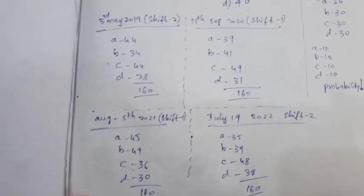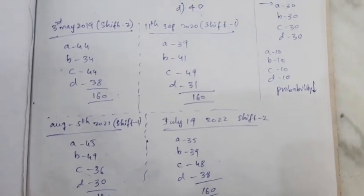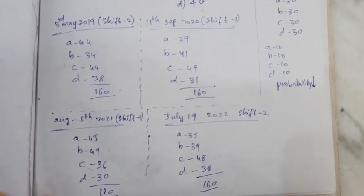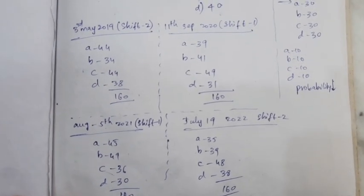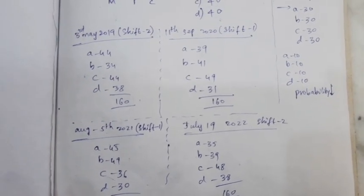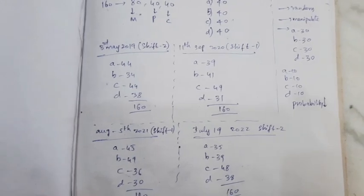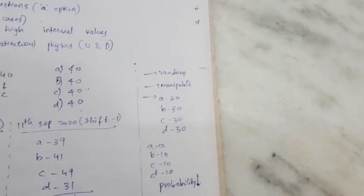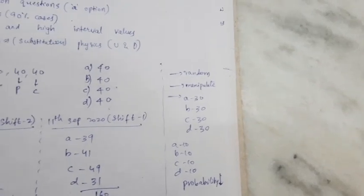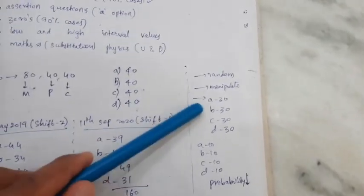In 2022: A is 35, B is 39, C is 48, D is 38. So almost we don't have a deviation — it's around 40, 40, 40, 40. So it doesn't exactly match. Some students pick random options — A or B or C or D — they are random.